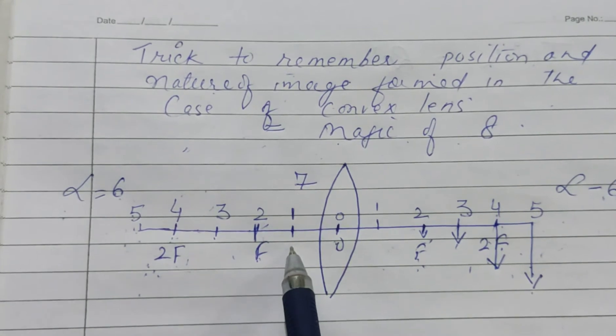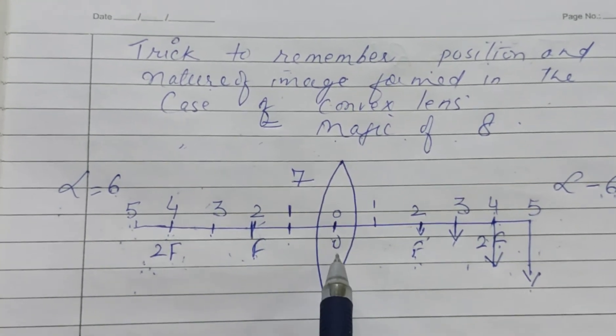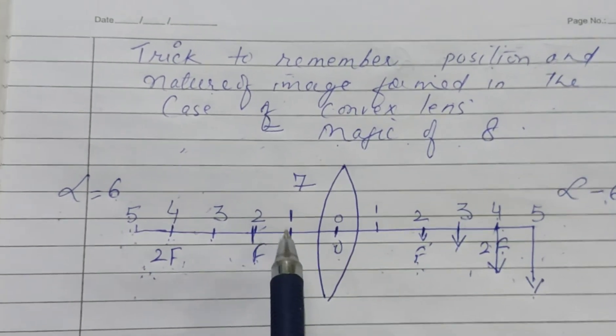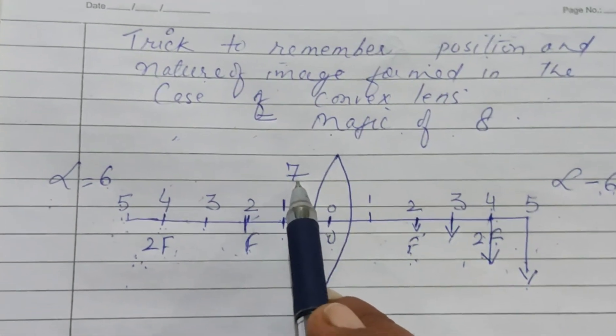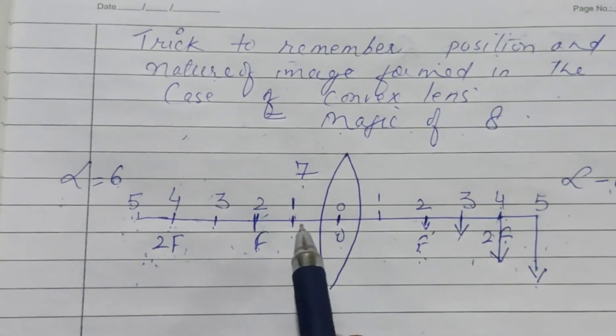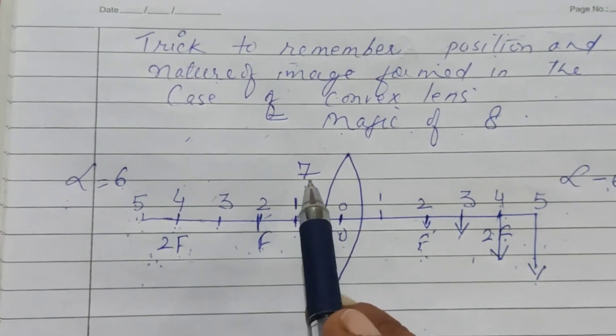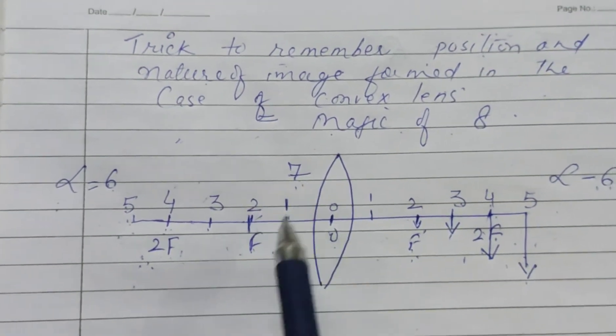Then we have the position at point 1—that is between f and o. 1 plus 7 gives 8. Now see, same side 7 is added to make 8, so on the same side the image will be formed.